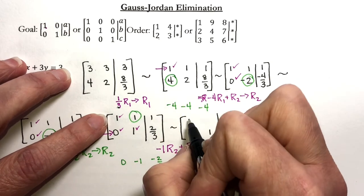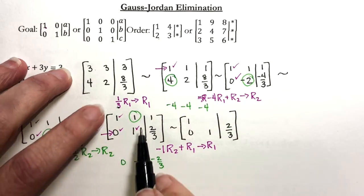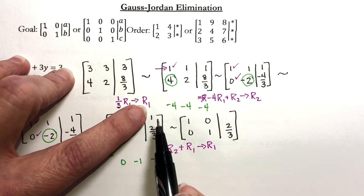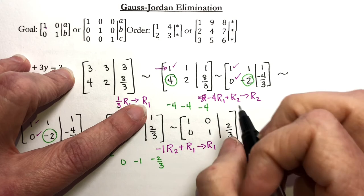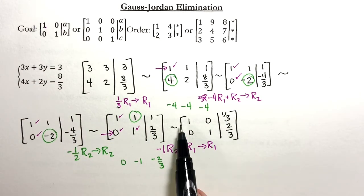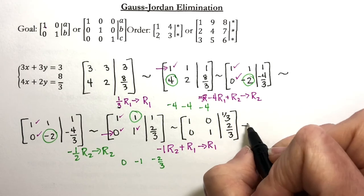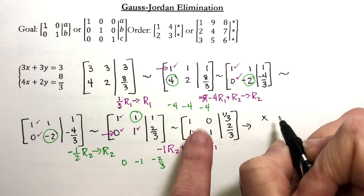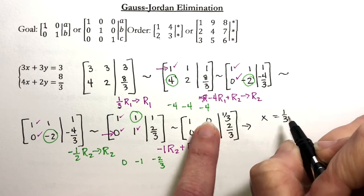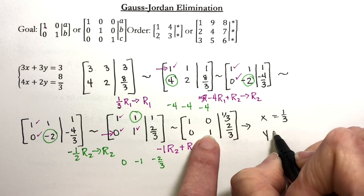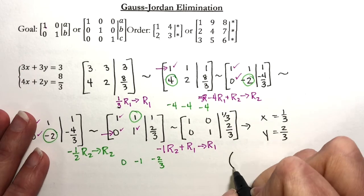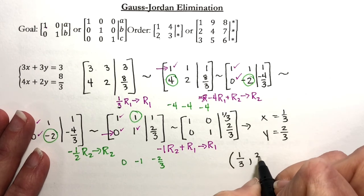Zero plus one is one. Negative one plus one is zero, which is good. That's what we tried to get. And then one minus two-thirds is one-third. Now you can go back to your system of equations, and this is equivalent to x: one x plus zero y is equal to one-third. Zero x plus one y is equal to two-thirds. So the answer to this system is one-third, two-thirds.